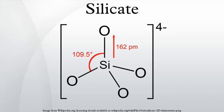A silicate is a compound containing an anionic silicon compound. The great majority of silicates are oxides, but hexafluorosilicate and other anions are also included.